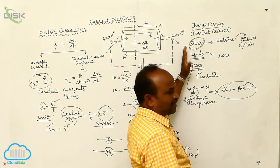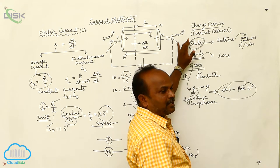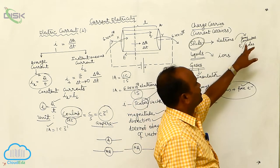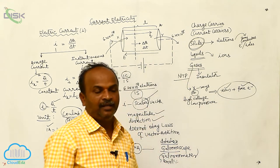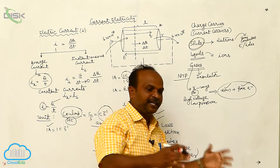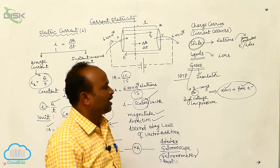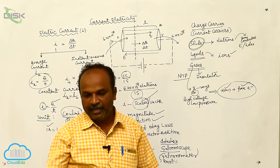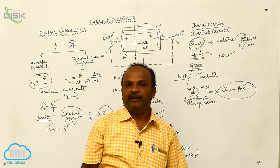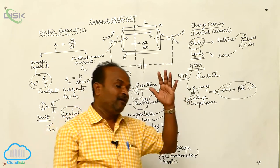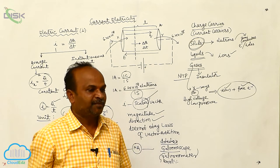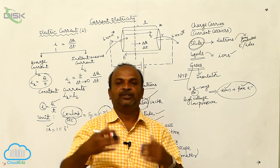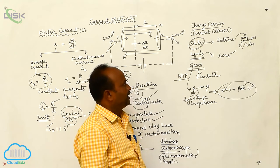To summarize: in solids — conductors, semiconductors, and insulators. In conductors, current is due to electrons. In semiconductors, current is due to electrons as well as holes. In liquids, when current passes through, liquid molecules split into ions, and those ions carry the current. In gases at ordinary temperature, gases are insulators, but when high voltage and low pressure or X-rays are applied, gases split into positive ions and electrons, both of which are treated as charge carriers or current carriers.